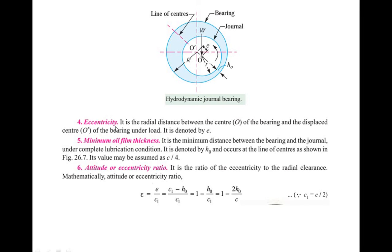The next term is eccentricity. It is the radial distance between the center O' of the bearing and the center O of the journal. It is denoted by e, as seen in the figure.